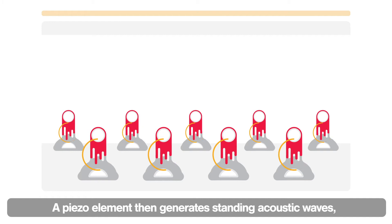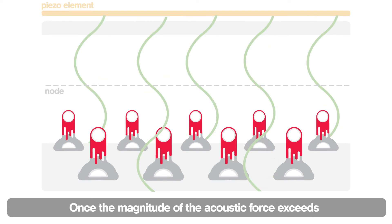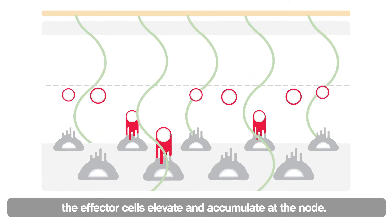A piezo element then generates standing acoustic waves, which create a node along the vertical plane. Once the magnitude of the acoustic force exceeds the binding strength between effector and target cells, the effector cells elevate and accumulate at the node.